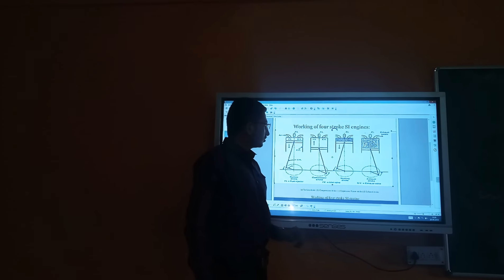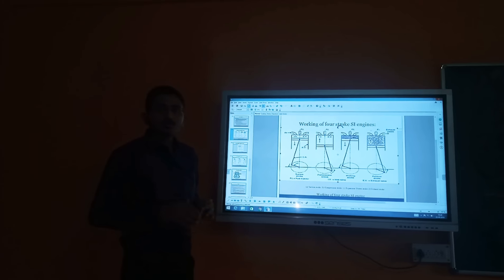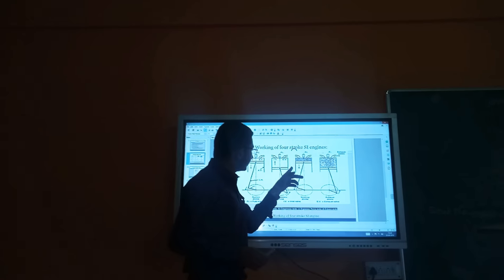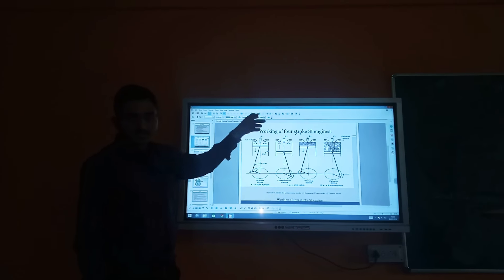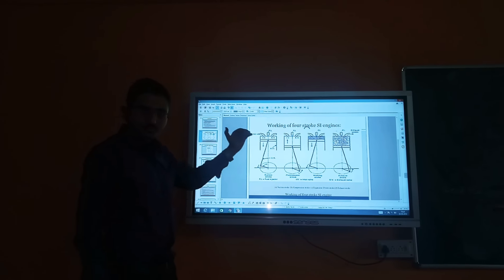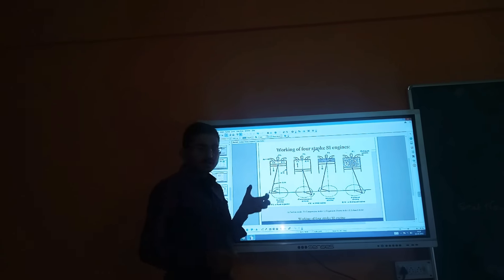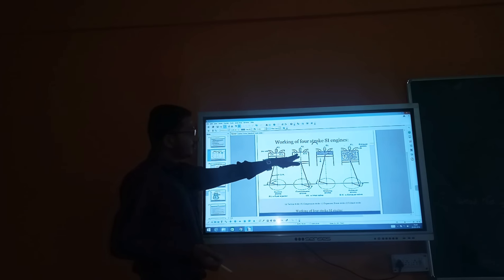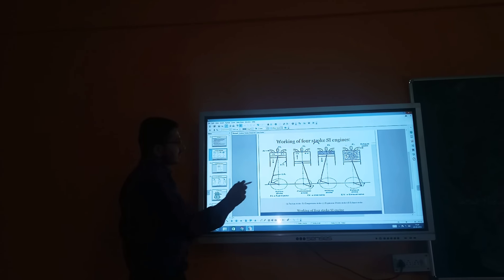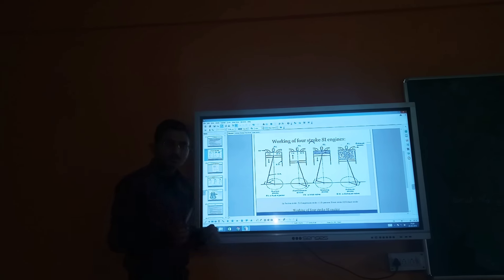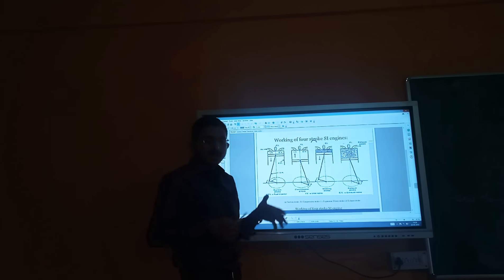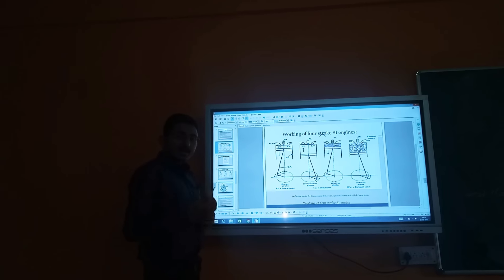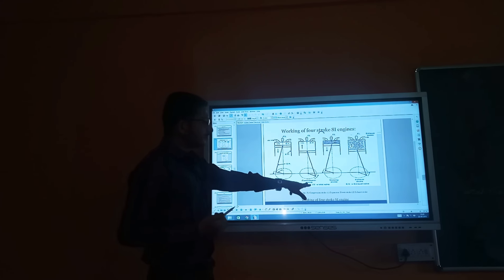Next is the compression stroke. In the compression stroke, the piston moves from BDC to TDC. The air-fuel mixture is highly compressed at the top dead center. Both inlet and outlet valves are closed simultaneously. Due to the high compression, the temperature and energy increase significantly during this compression stroke.